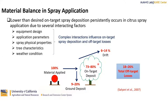The amount of spray that deposits on the tree canopy — what we call the on-target deposition — is often lower than we desire because of the complex interaction between equipment design, application parameters, spray physical properties, tree characteristics, and weather conditions. Research showed that for 100% of material sprayed in citrus applications, only about 73% to 80% deposits on the canopy, 6% to 14% potentially drifts away from the application area, and 9% to 20% falls to the ground. However, these estimates were based on limited research data and may not apply to the diverse situations that prevail during an application.